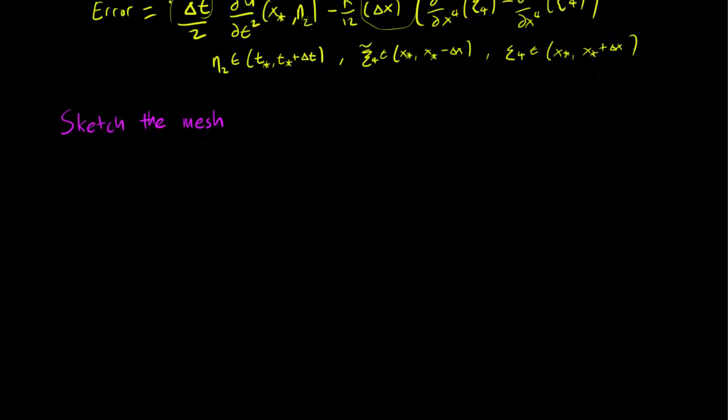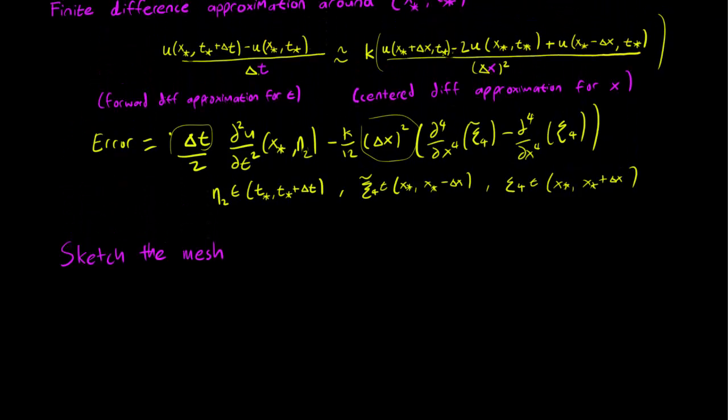It's a lattice that covers all the points that we care about in our finite difference approximation. So let's first draw the x terms. So we start with x_0 and this is going to be equal to 0. So remember that our boundary conditions go from 0 to L.